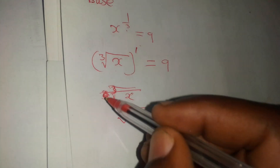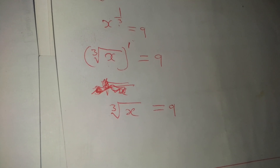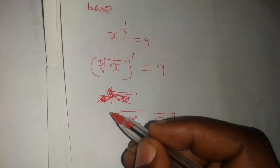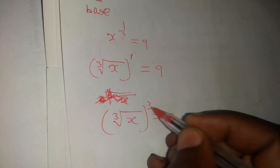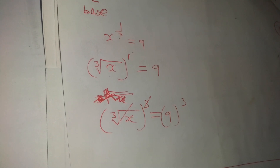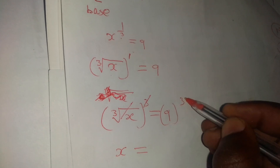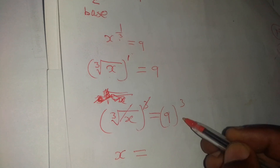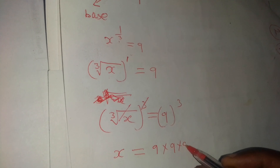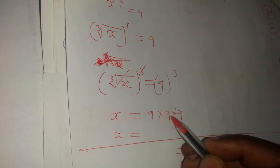From here, how do we solve for x? We don't want to see this cube root. So we multiply both sides by 3 — we raise both sides to the power of 3. The 3 and the cube root cancel each other. So you have x equals 9 to the power of 3. This means 9 is raised to the power 3, meaning it is 9 times 9 times 9. So we have to multiply 9 times 9 times 9.